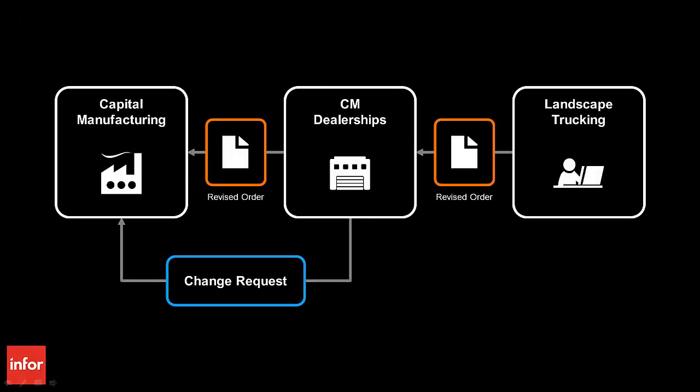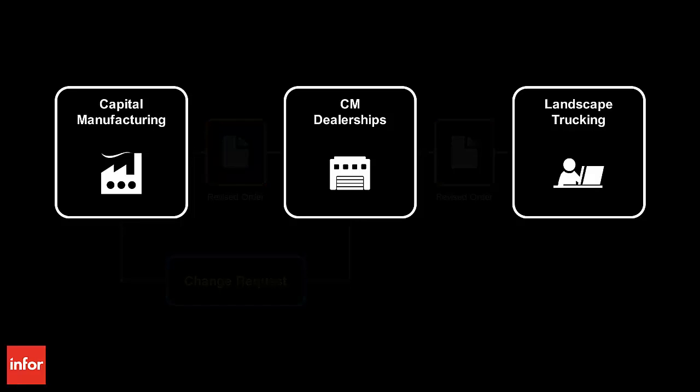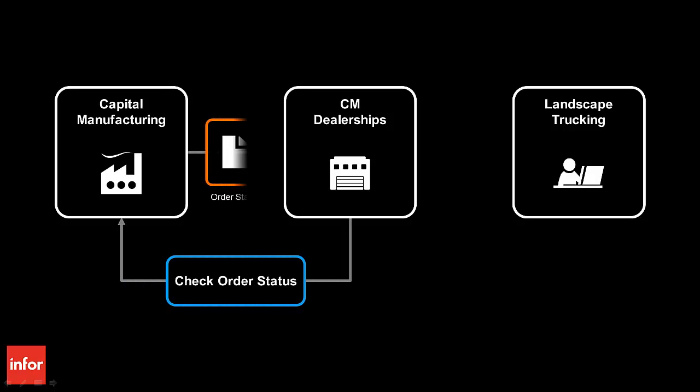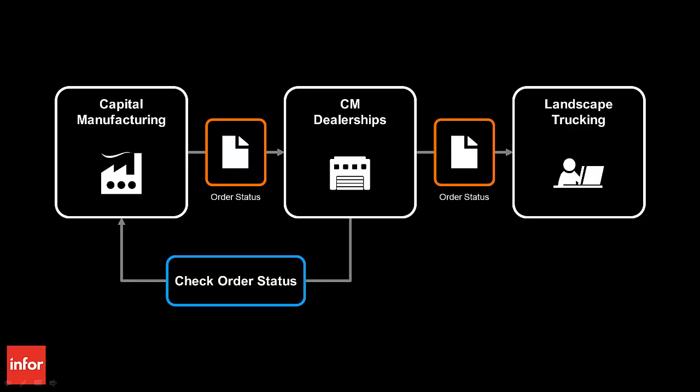We have just seen how Capital Manufacturing automates the sales and manufacturing process, generates complete and accurate sales and manufacturing orders, easily processes change requests, and quickly processes special requests with Infor Product Configuration Management. Let us end our scenario by looking at how CM Dealerships uses Infor Product Configuration Management to review the status of their orders.